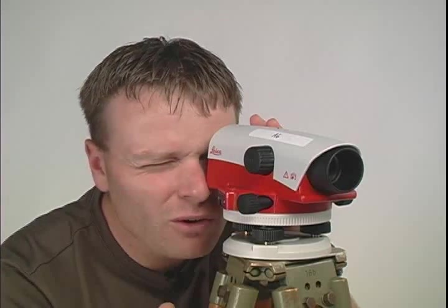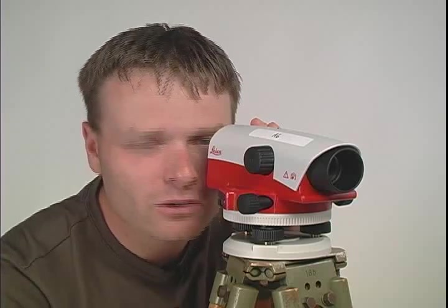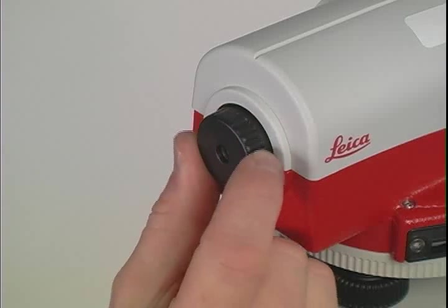So looking through the telescope, rotate the eyepiece until you have clear, crisp, black lines through your line of sight.